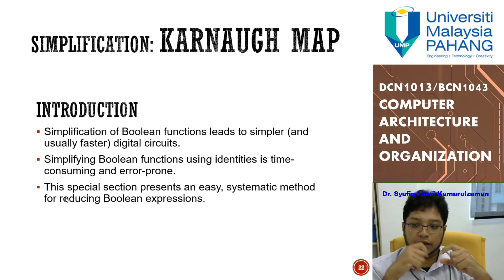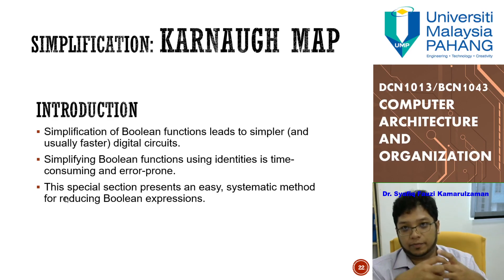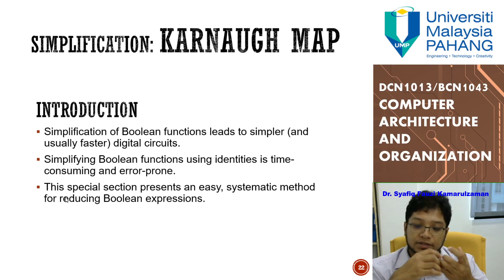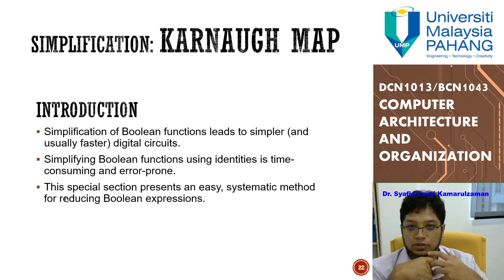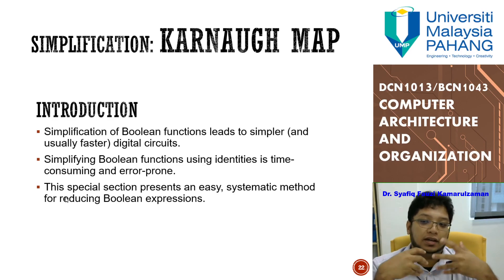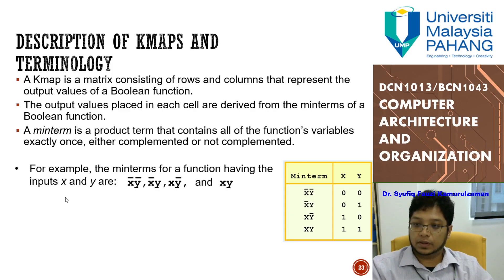Simplifying Boolean functions using algebraic identities is time-consuming and error-prone — you can easily make mistakes managing the algebra. This section introduces a systematic method for reducing Boolean expressions so that you can create the most simplified Boolean functions easily using the K-map.